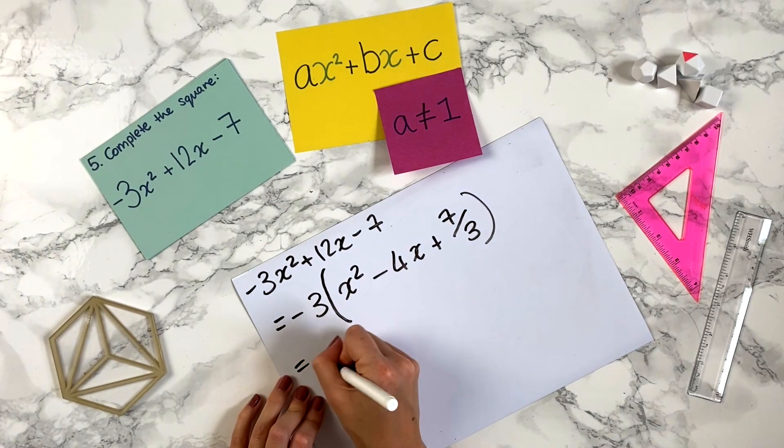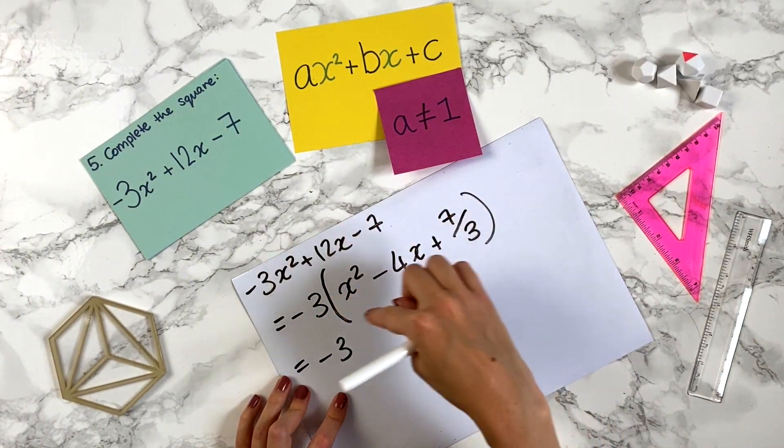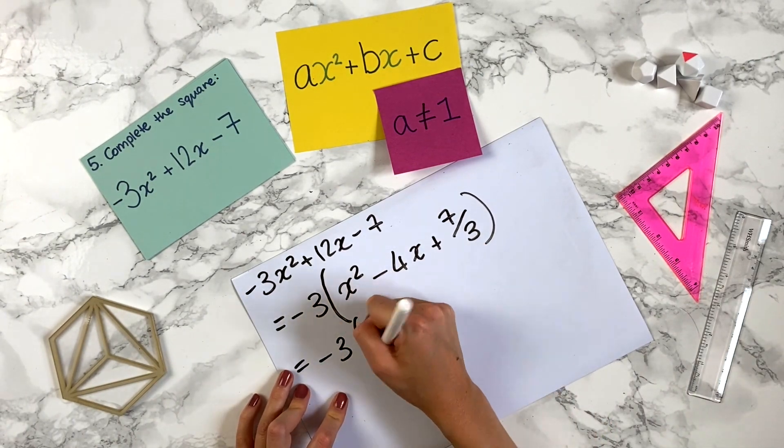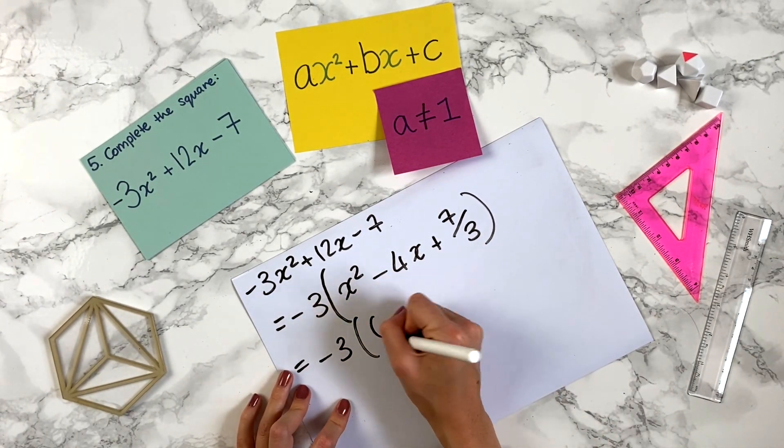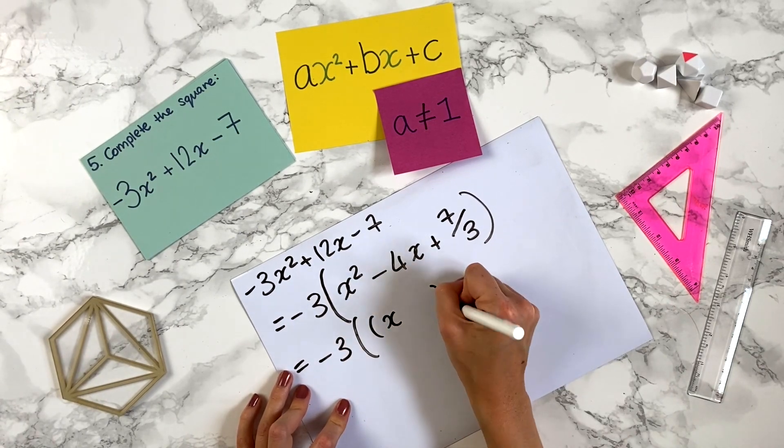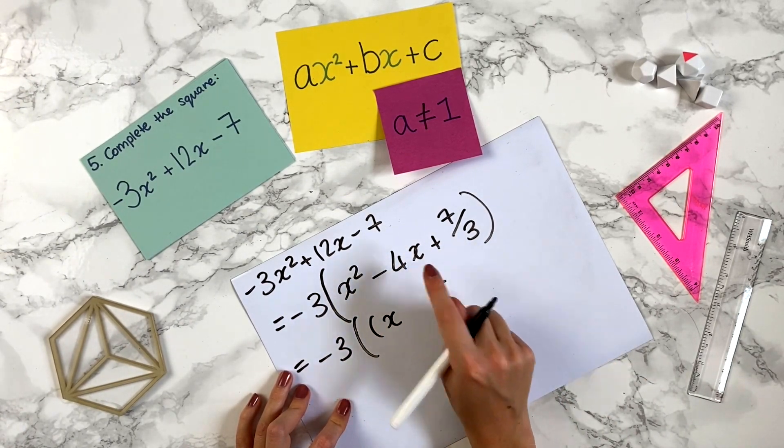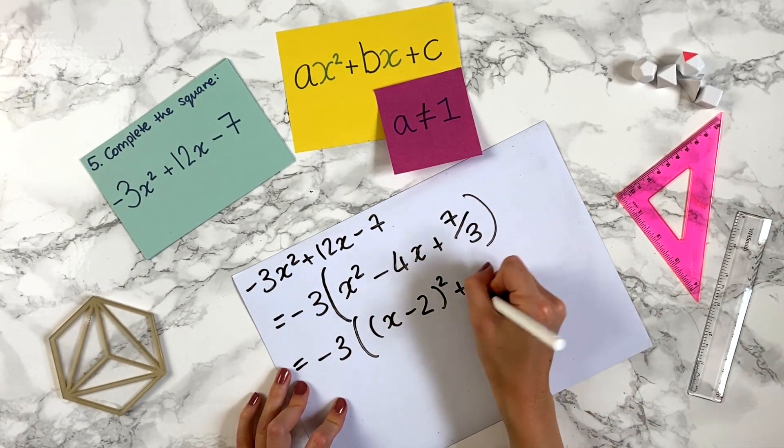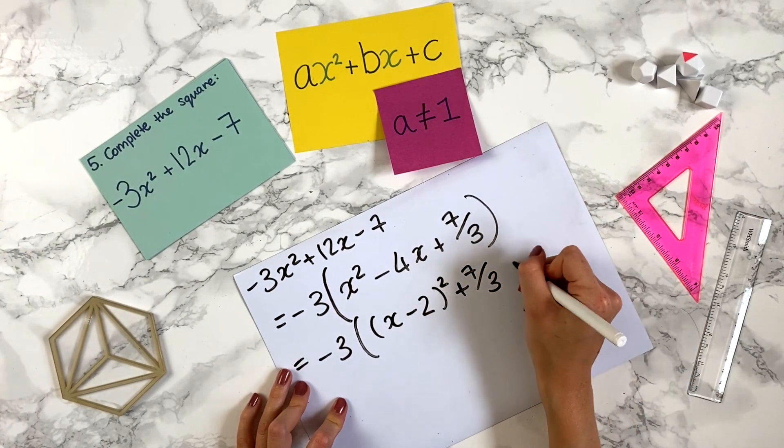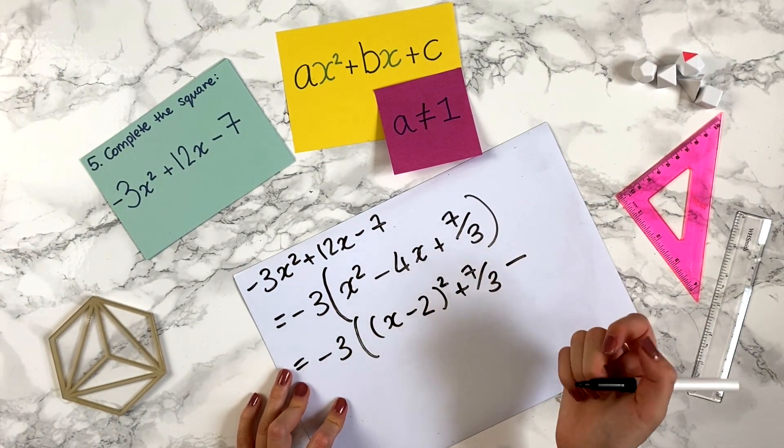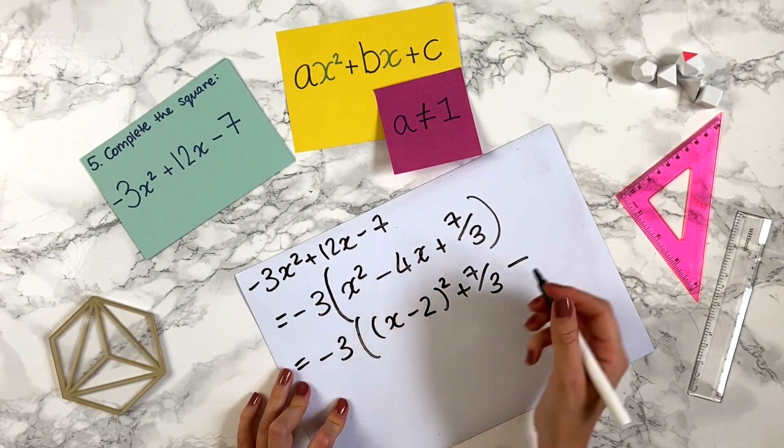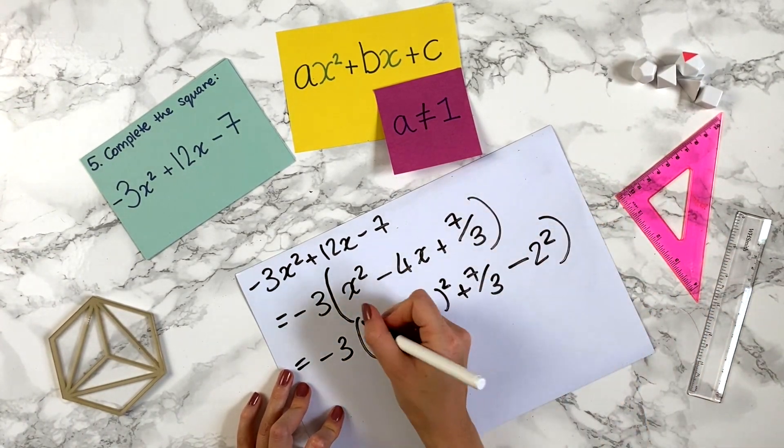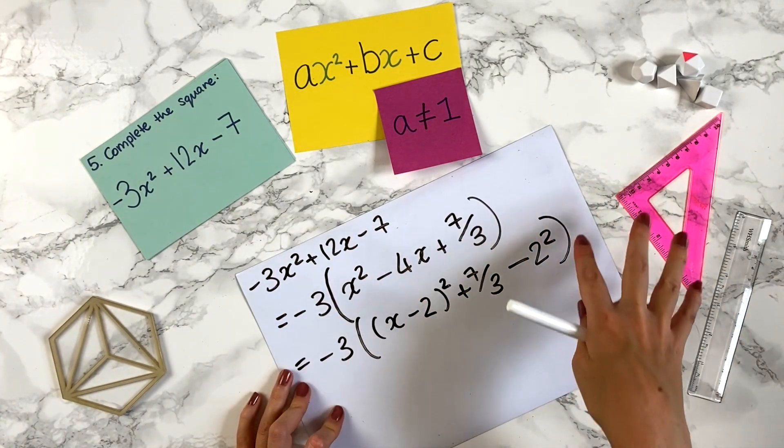Now we're going to complete the square using our original method inside this bracket and keep this minus 3 outside. So we do a bracket x leave a space bracket squared, half of minus 4 is minus 2. Then we're chucking on the term at the end which is plus 7 over 3, then we're minusing because we always minus here this number 2 squared, minus 2 squared, and remember to keep this big bracket because this minus 3 is times all of this.